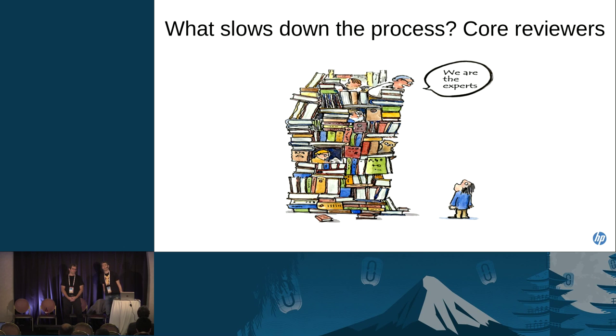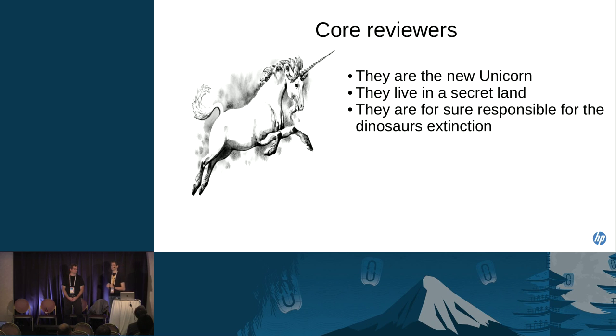Third factor, core reviewers. This is one of the risky things to say, but it's a reality, right? They are at the end of the process. They are the people with the power. They can say yes, this patch is good, can land or say no, no way. This patch is not going to land. And so try to understand who are core reviewers. Someone said core reviewers are the new unicorn. They live in a secret land. And we know for sure that they are responsible for the dinosaur extinctions.